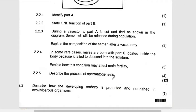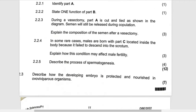Then they are saying: explain how this condition may affect fertility. In some cases, males are born with part C — the testis — located inside the body, which fails to descend into the scrotum. The testis produces sperm. It will affect fertility because the temperature of the testis inside the body will be too high. If the temperature is too high, sperm will not be produced in high quantities.